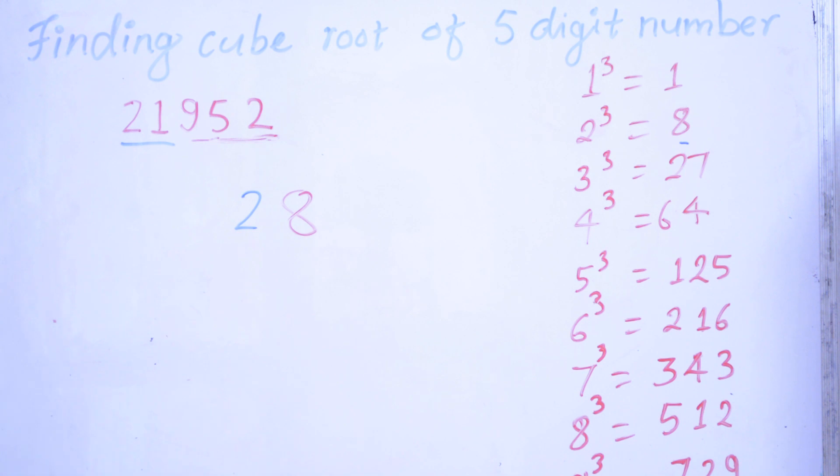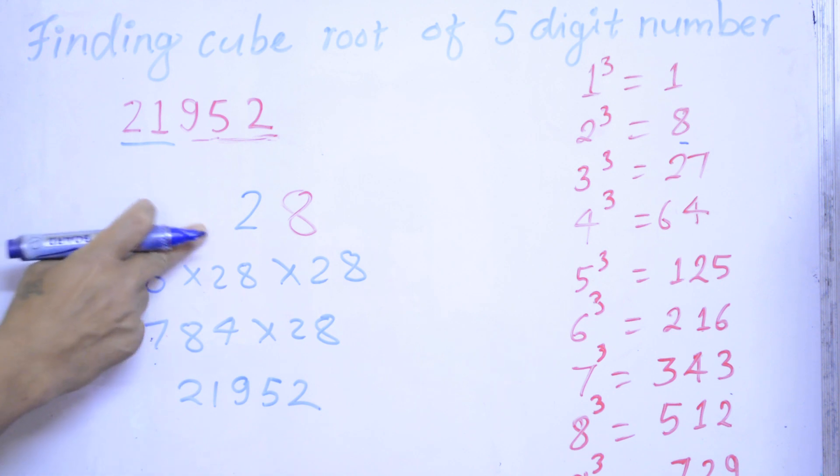So 28 is the cube root of 21,952. We can check this answer also here. 28 times 28 times 28. So 28 times 28 is 784 times 28, which is 21,952. The answer is 28 is the cube root of 21,952.